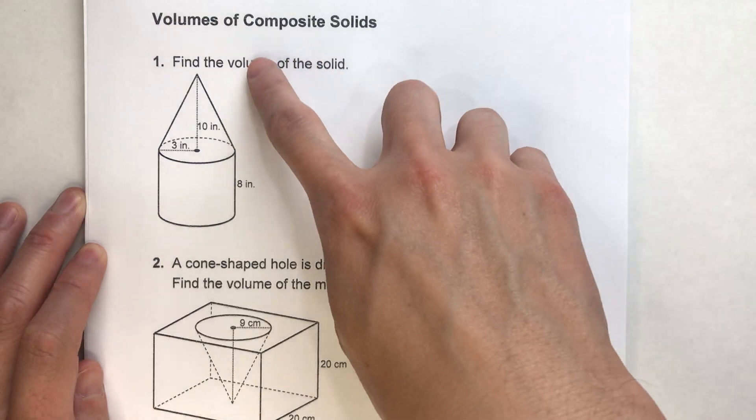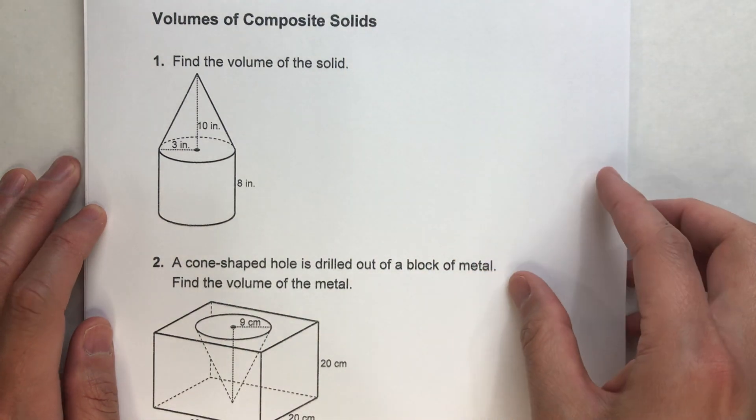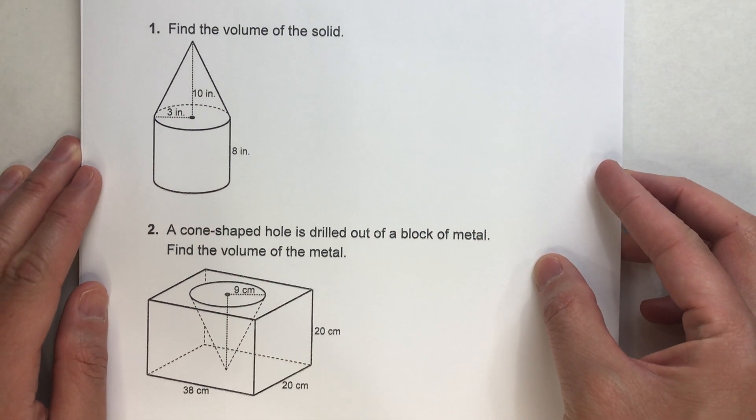Today we are finding volumes of composite solids. A composite solid is a solid that's made up of different parts.